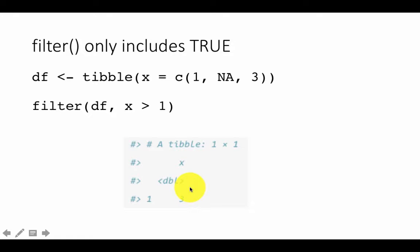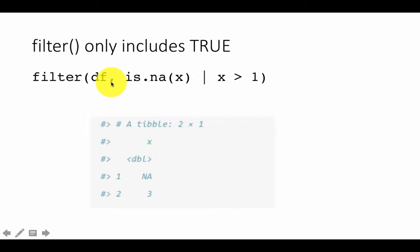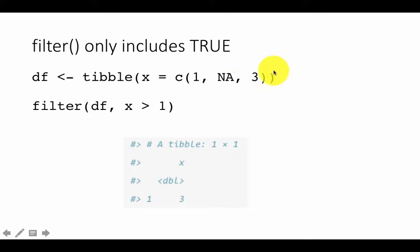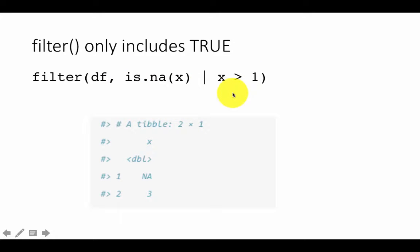Filter only includes the TRUE values. If you also want to include the NAs in your results, you can say filter(df, is.na(x) | x > 1). We are saying: include rows where X is NA or where X is greater than 1. So both the NA row and the value 3 will be included in this filter result.